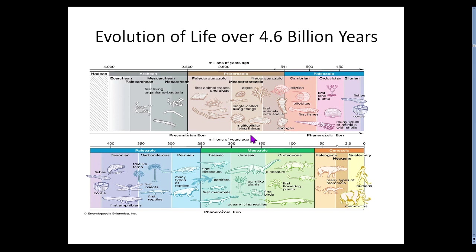Evolution of life over the last 4.6 billion years — this is not to scale. You've got your very simple single-cell prokaryote cells, then things starting to go into eukaryote cells in the Proterozoic, and then the eukaryotes begin to make multicellular living things. Sponges, algae, bacteria, jellyfish start to show up. You've got the Ediacaran biota — a whole other fascinating group of animals that came and went and don't seem to have any obvious ancestors or descendants.